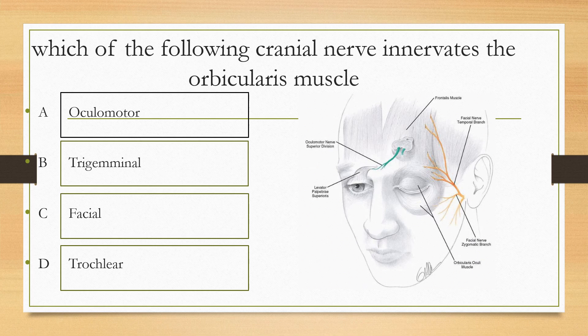Which of the following cranial nerves innervates the orbicularis muscle? Options are: option A oculomotor, option B trigeminal, option C facial, option D trochlear. The answer is option C, facial nerve.